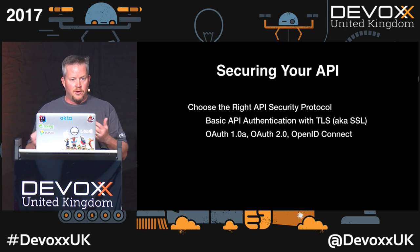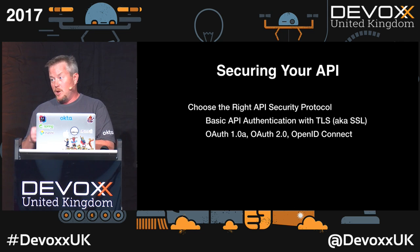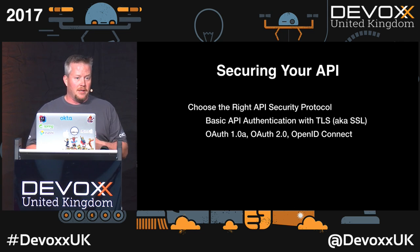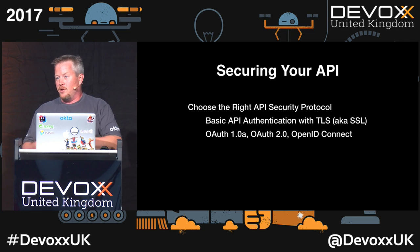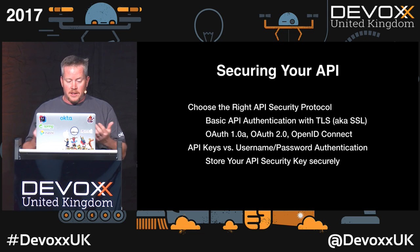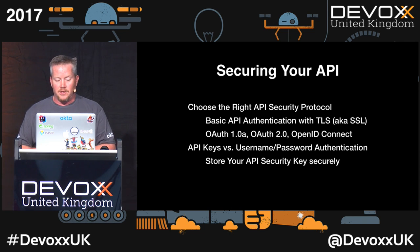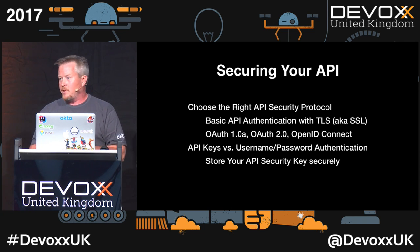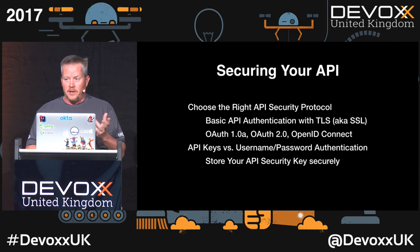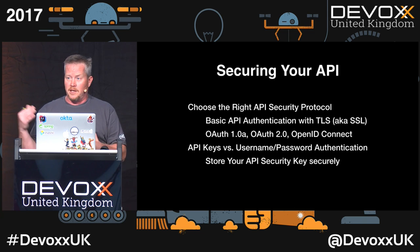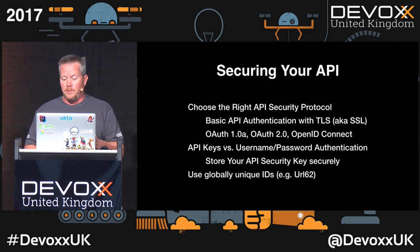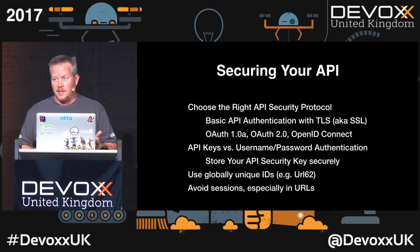If you're doing social login, one of the things at Okta is you can use social login like Facebook, Google, or GitHub. Instead of you configuring and worrying about that, you just set it up in your Okta instance and your users get it as another button on their login form. Another thing to consider is API keys versus username/password authentication. API keys are usually a little better, but you have to store them securely — make sure those are locked down. Another good idea is using your HTTPS certificate — it has a private key and a public key, so you can use that to sign your JWTs and the public key to decrypt it. Make sure you use globally unique IDs and avoid sessions, especially in URLs.